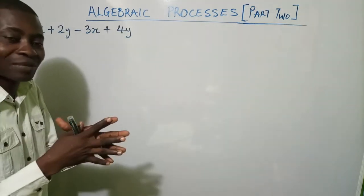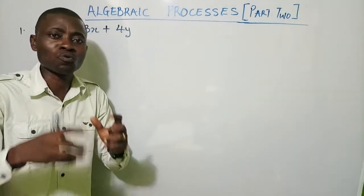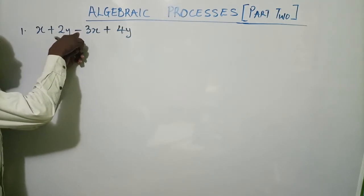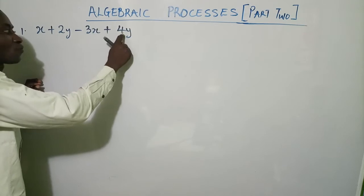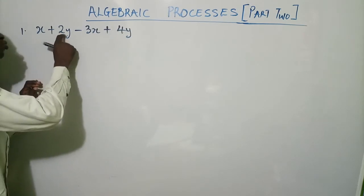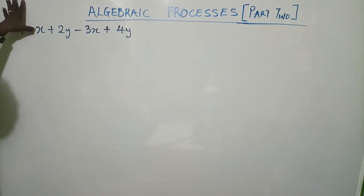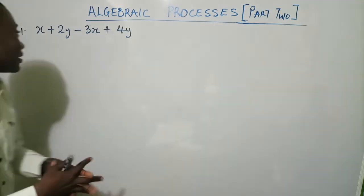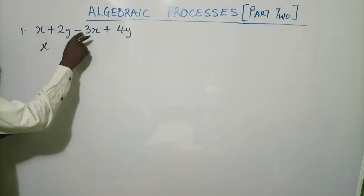We are going to bring the like terms together. When bringing them together there's something in mathematics to keep in mind — the sign attached to each term. This minus belongs to 3x, this plus belongs to 4y, this plus belongs to 2y, and this x standing here also has a sign, and that sign is plus. So as you collect like terms, keep those signs in mind.